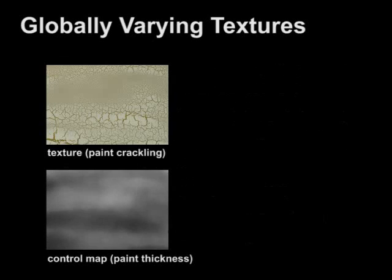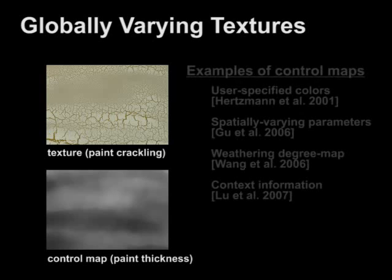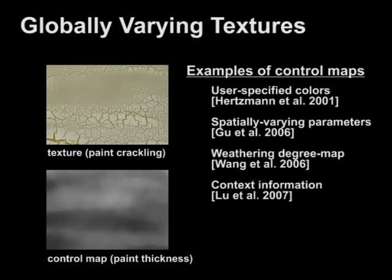In addition to the usual textures, globally varying textures may also be associated with a control map. Here we show an example of a crackling paint texture, where the control map defines the thickness of the paint. A variety of previous research uses control maps as well, although they refer to them with different names.